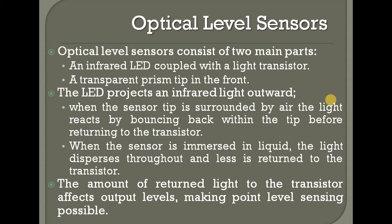The optical level sensors have two main parts. The first is an infrared LED coupled with a light transistor. The second one is a transparent prism tip at the front. There is an infrared light with a phototransistor. The sensor, when surrounded by air, bounces the light back to the sensor. When the sensor is immersed in liquid, light disperses throughout and less light returns to the transistor. The transistor output will be depressed.